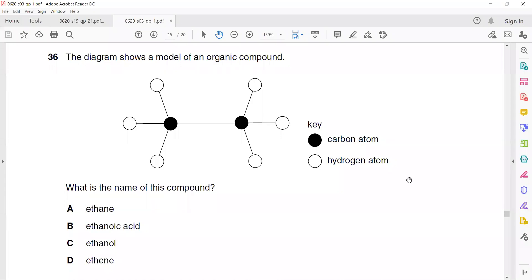Organic chemistry MCQs, question 36. The diagram shows a model of an organic compound. What is the name of this compound? Okay, two carbons, they have a single bond, that's why it is ethane. So it is ethane.